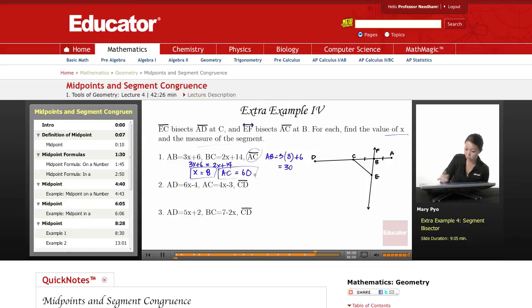So AB is 30, that means AC is 60. AD, the whole thing, is 6x minus 4. AC is 4x minus 3. And you have to find CD. Now remember how EC bisected AD, that means AD is cut in half, C is the midpoint.